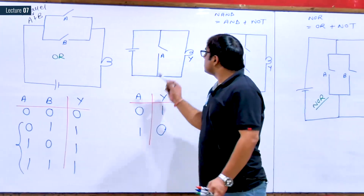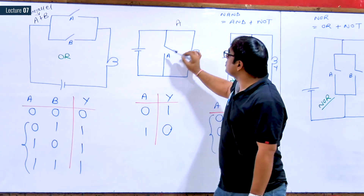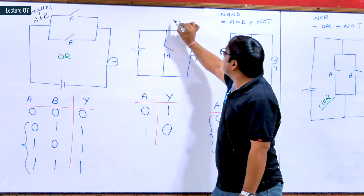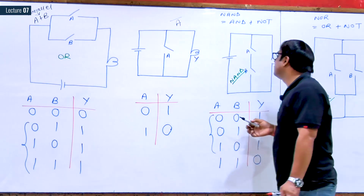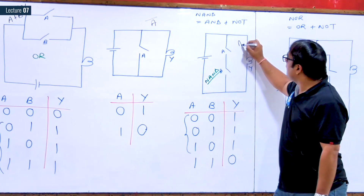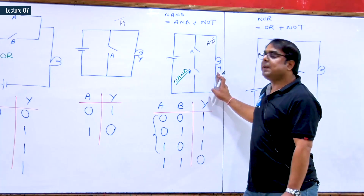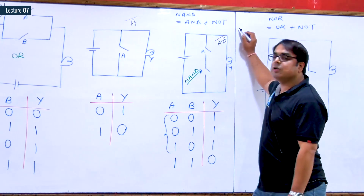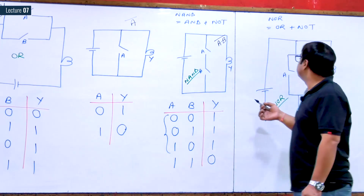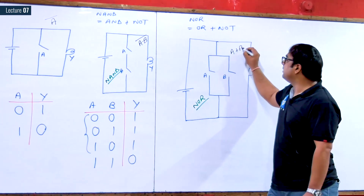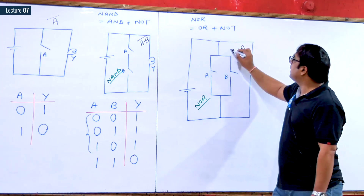For a single switch A in parallel to the bulb, you apply a whole complement. Whenever a switch or combination is in parallel to the bulb, give the whole complement. For A and B in series with the combination in parallel to the bulb, the expression becomes (A·B) complement — this is the NAND gate expression. For A and B in parallel with the combination in parallel to the bulb, the expression becomes (A + B) complement — the NOR gate expression.